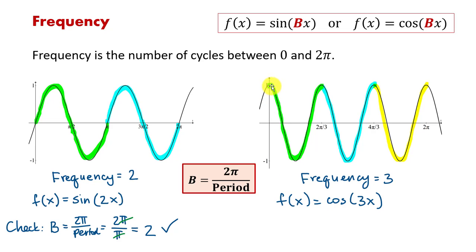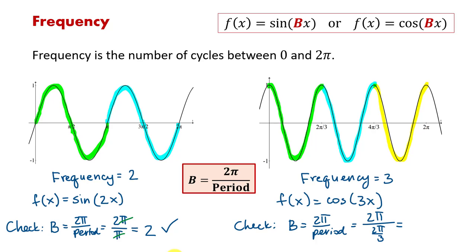Let's check the second graph. The first cycle goes from zero to two pi over three, so the period is two pi over three. Frequency equals two pi divided by two pi over three, which means we multiply by the reciprocal: two pi times three over two pi. Dividing out two pi gives us three over one, or just three — confirming the frequency we found when we counted cycles by hand.